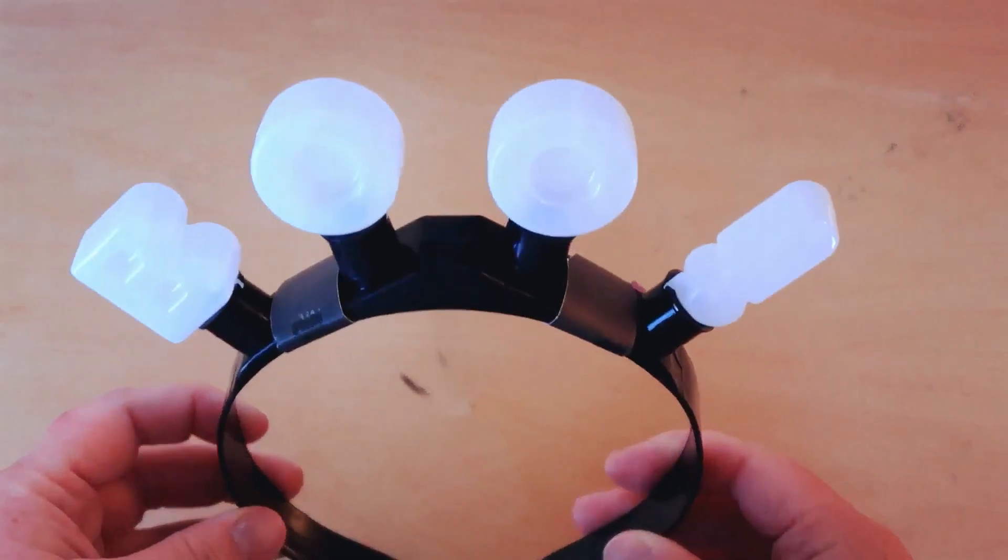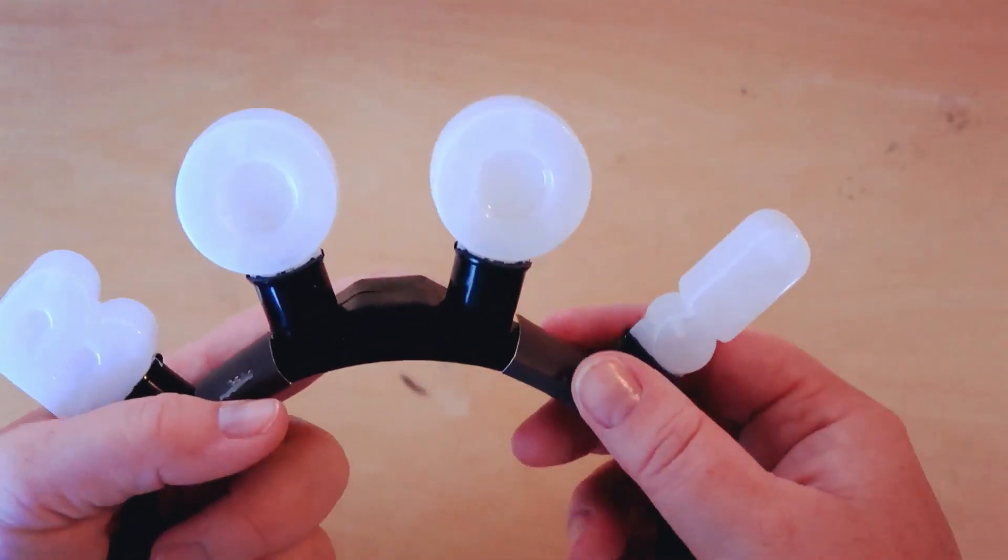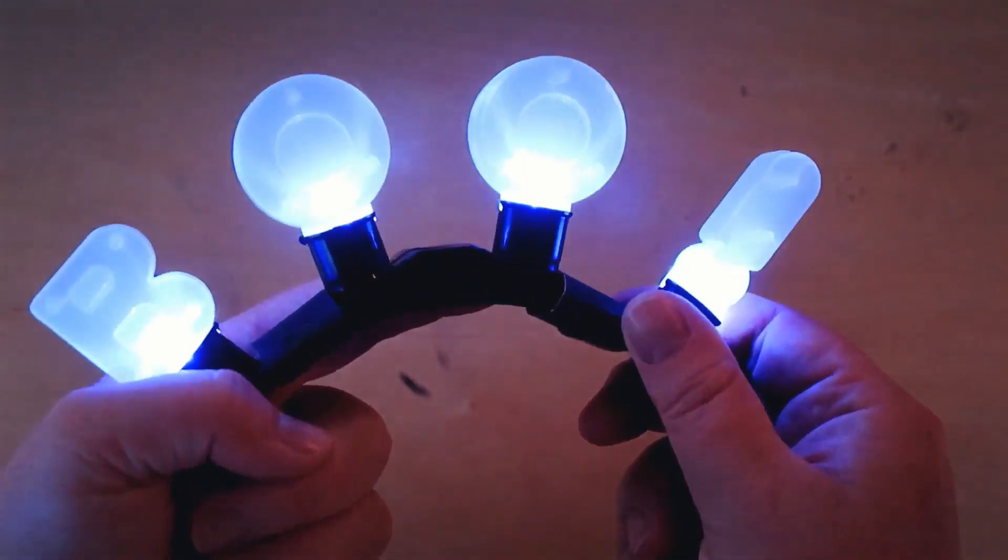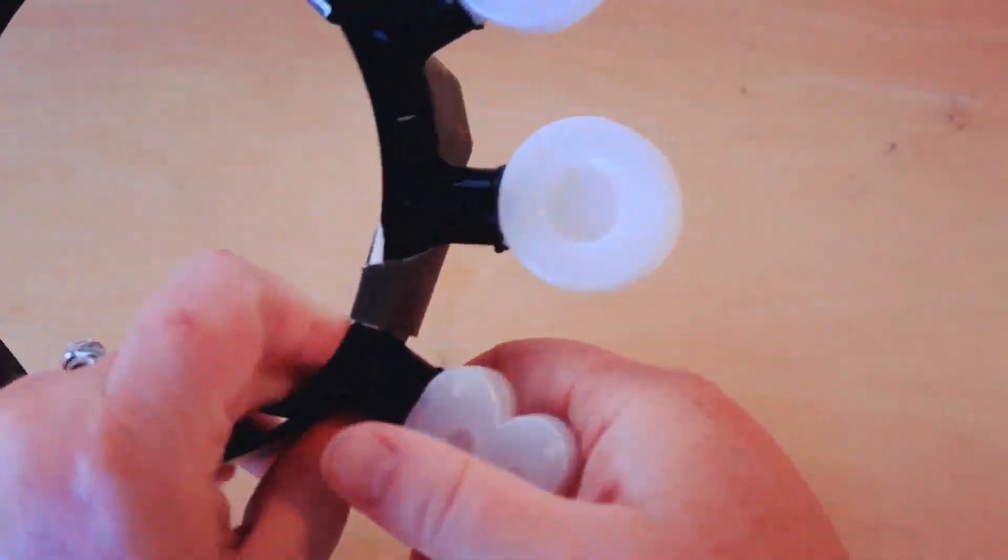You're gonna go ahead and grab this BOO headband from the Dollar Tree and it does light up in three different ways. It flashes and then it flashes a little bit slower and then it's just straight on.